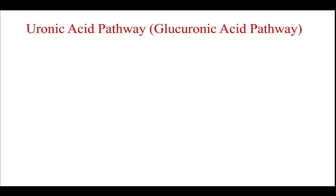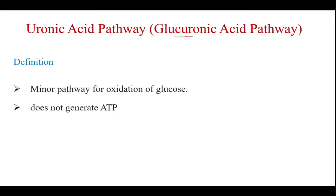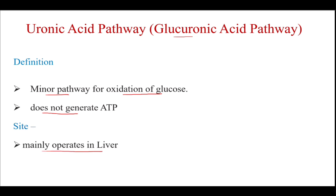The uronic acid pathway, otherwise called the glucuronic acid pathway, is a minor pathway for oxidation of glucose that does not generate ATP. This pathway mainly operates in the liver.